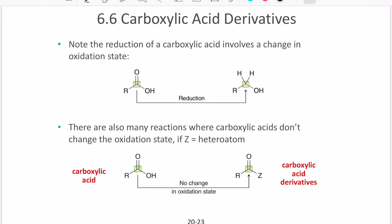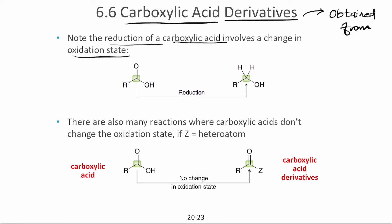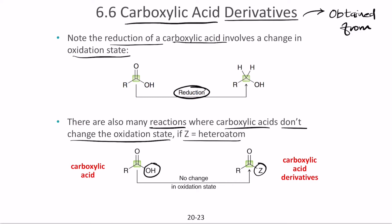In lecture 2, let's continue our topic on carboxylic acids, but this time let's discuss carboxylic acid derivatives. Derivatives are things that are obtained from carboxylic acids. Remember that reduction of a carboxylic acid changes its oxidation state. There are also many reactions where carboxylic acids don't change the oxidation state but have a heteroatom — in place of OH we have a heteroatom. Depending on the type of atom the heteroatom contains, we call them carboxylic acid derivatives.